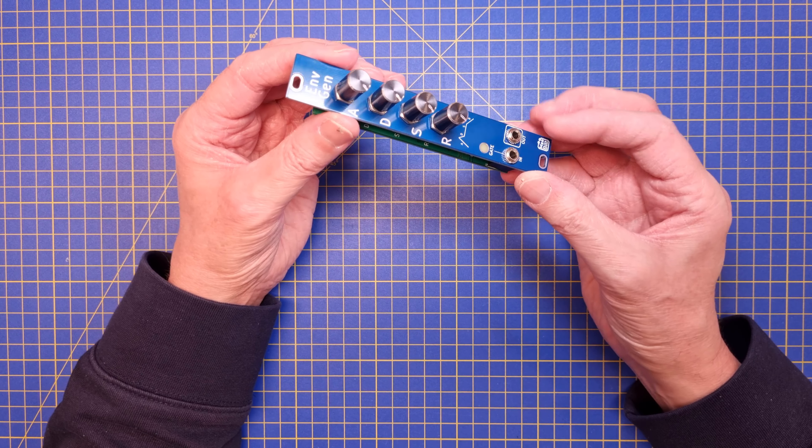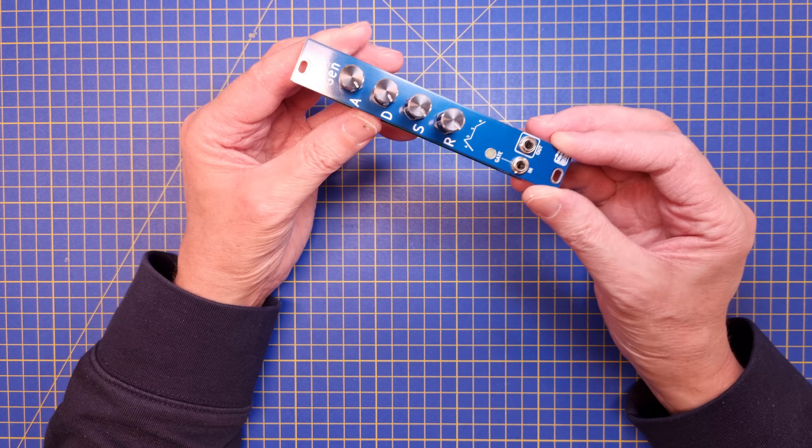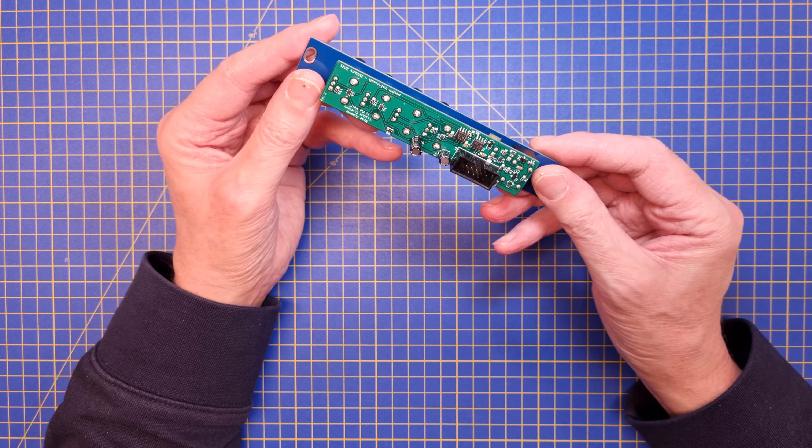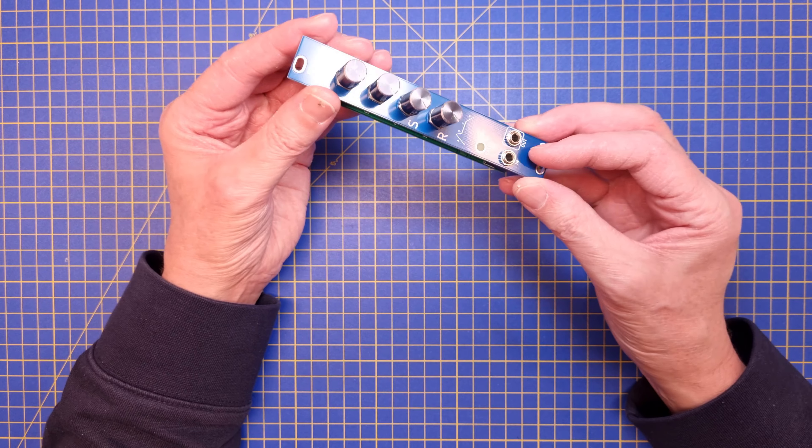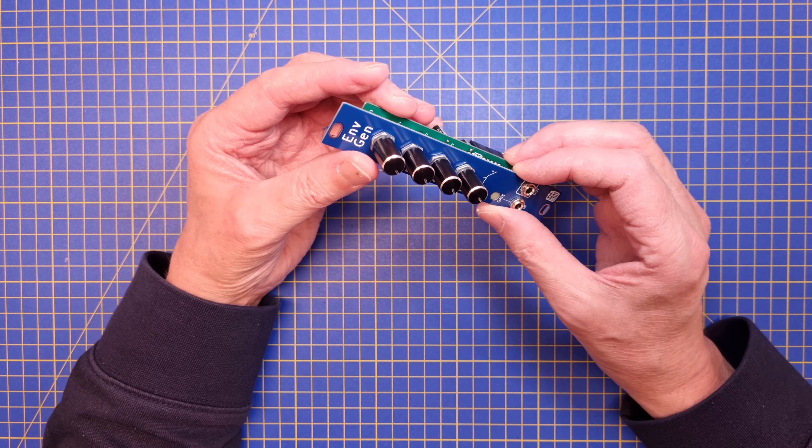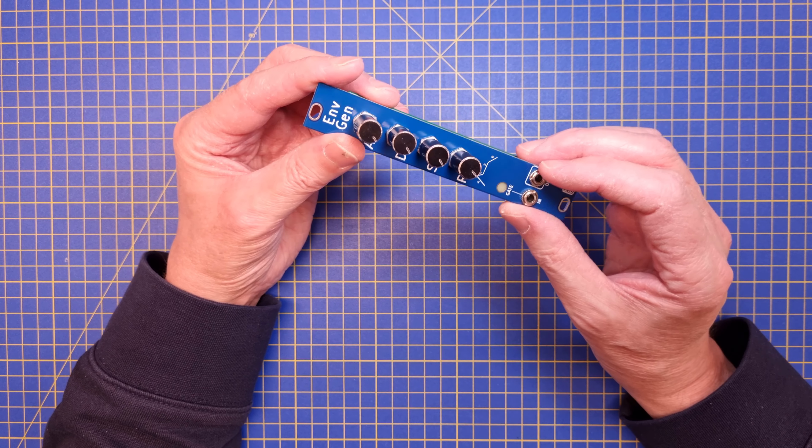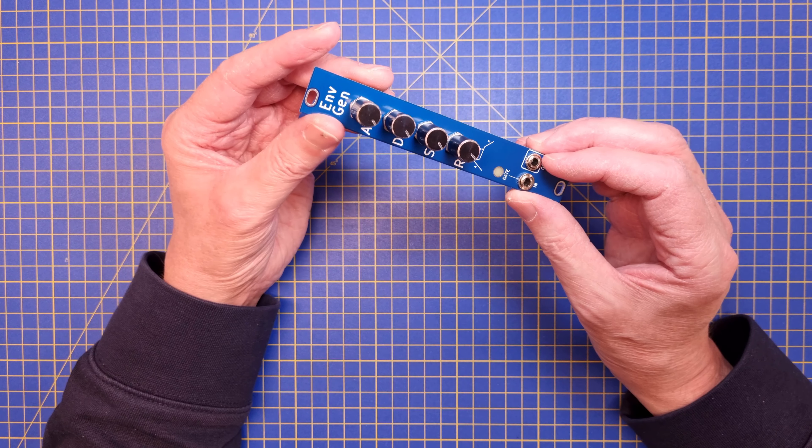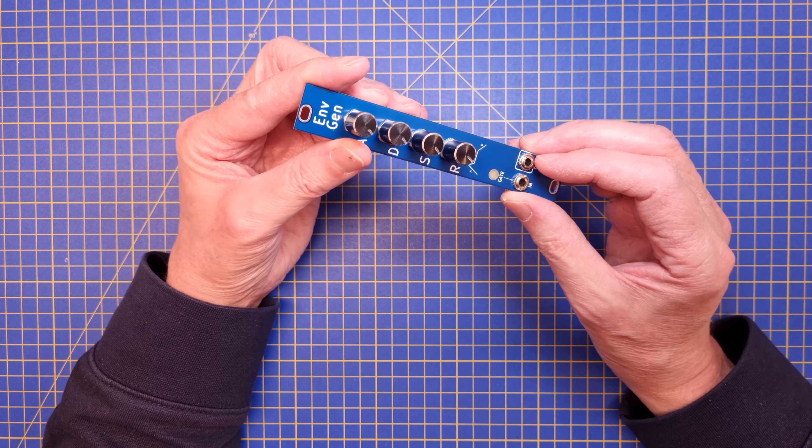The buildup of the module is very simple. Everything is mounted on a single PCB. Since I'm using SMT components for the most part, I could fit all components on one side of the PCB and put pots, jacks and LEDs on the other side as through-hole components.